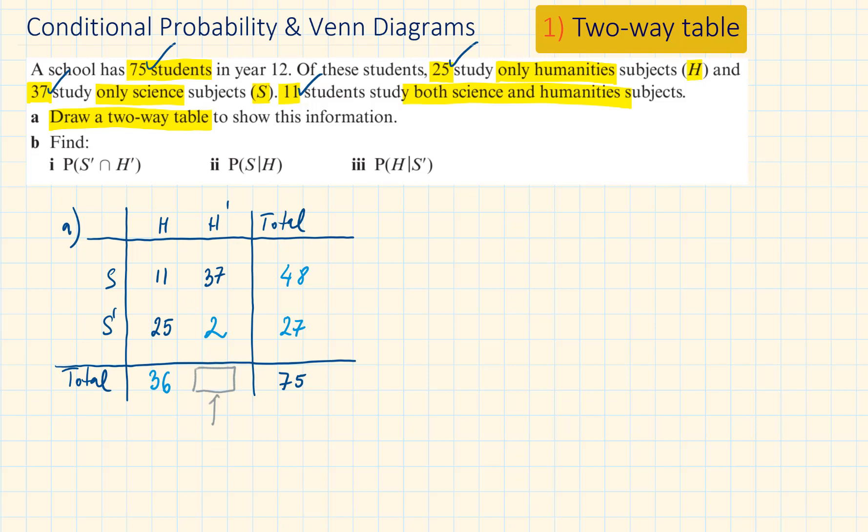And then the two totals in the bottom row, 36 and 39. We can see from here that filling in the values of a two-way table is just like solving a puzzle.